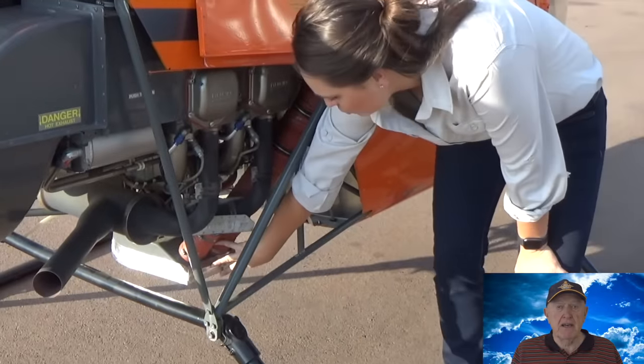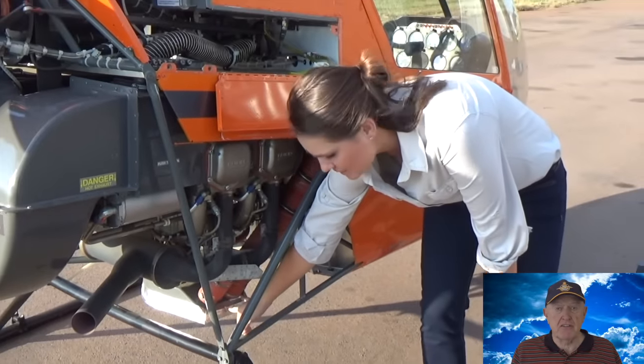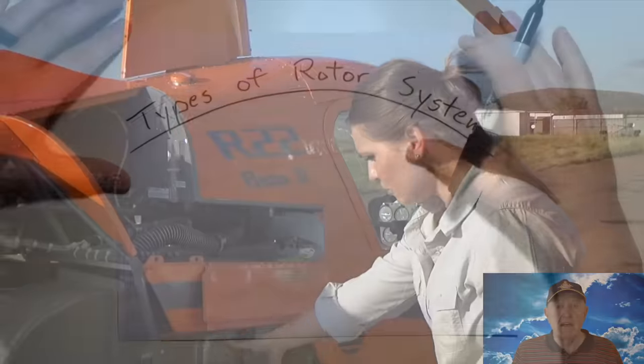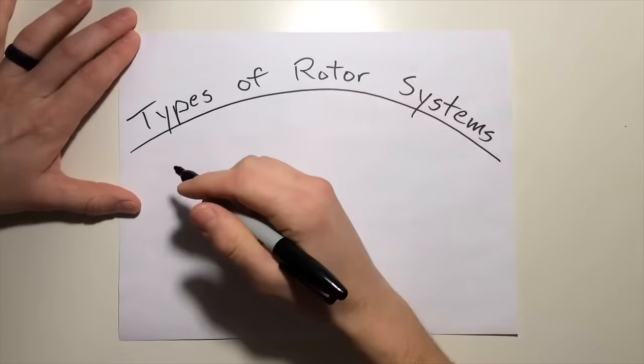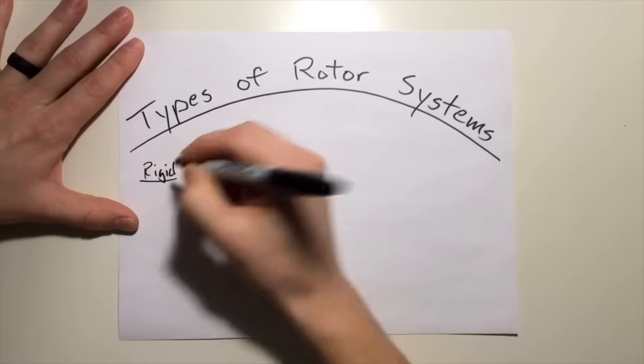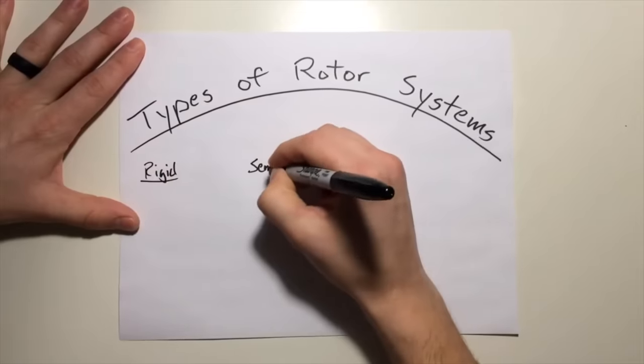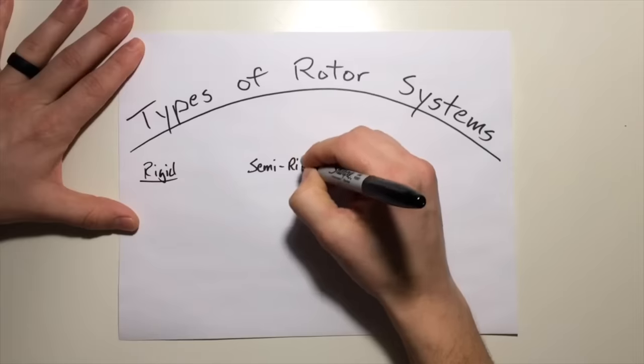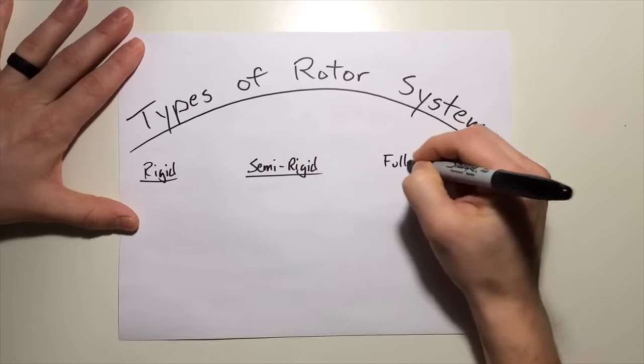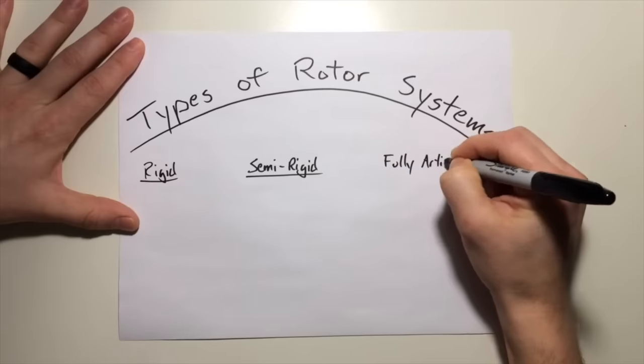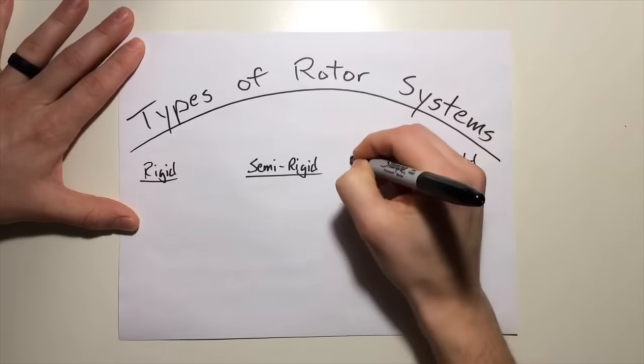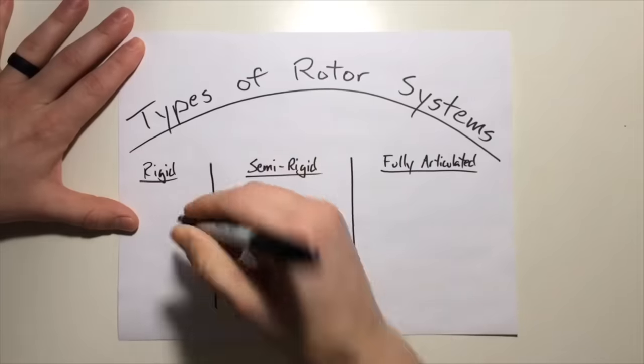Jacob from Helicopter Lessons in 10 minutes or less explains that there are three types of rotor systems. For this video I'll be covering three types of rotor systems. The first one being a rigid system. Next one being a semi-rigid system. And lastly we'll cover the fully articulated rotor system. Now each one's slightly different but more so just kind of building off of each other.